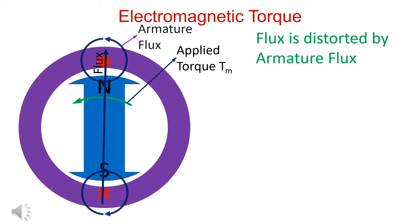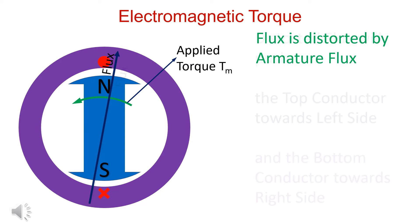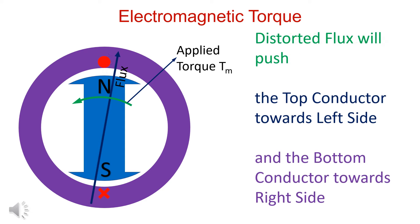Armature flux distorts the main flux. Distorted flux pushes the top conductor towards the left side and bottom conductor towards the right side.